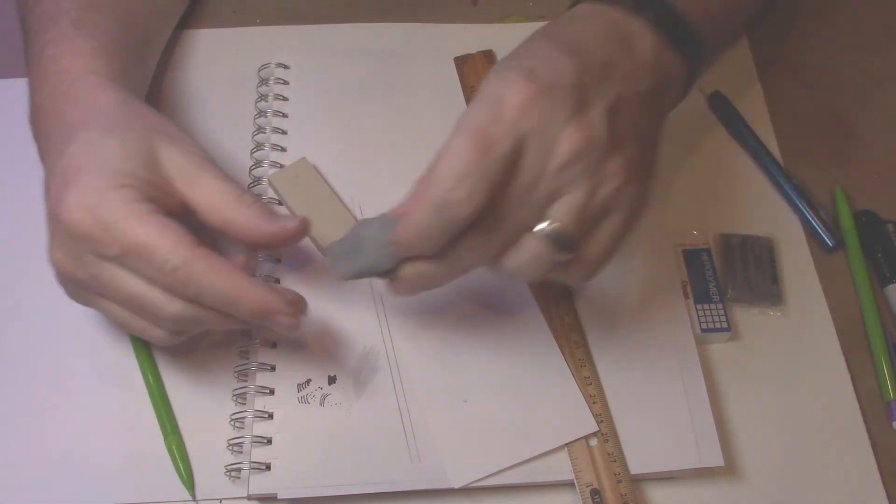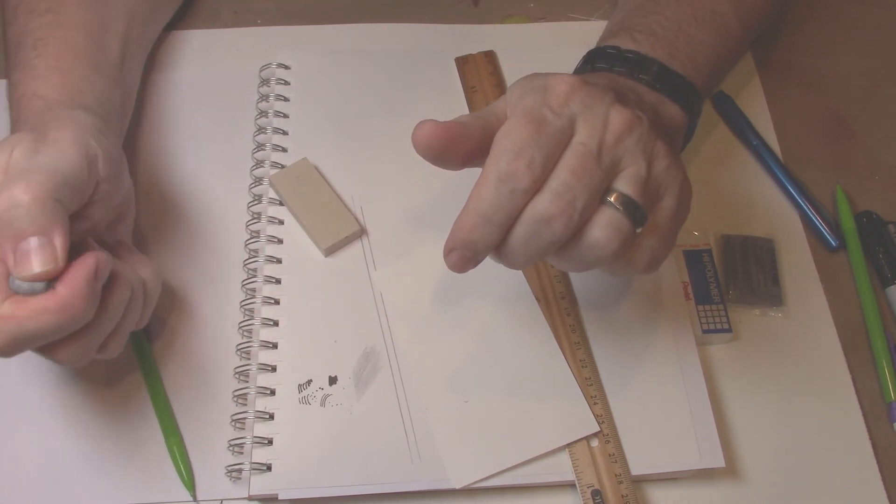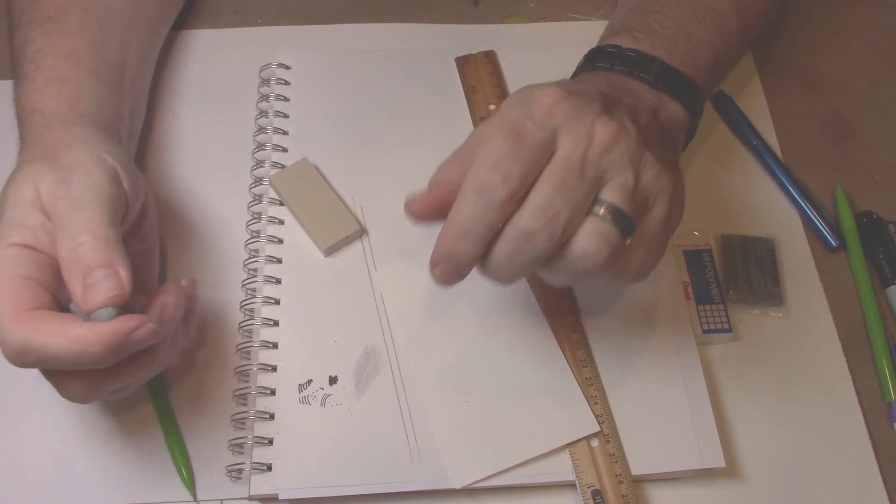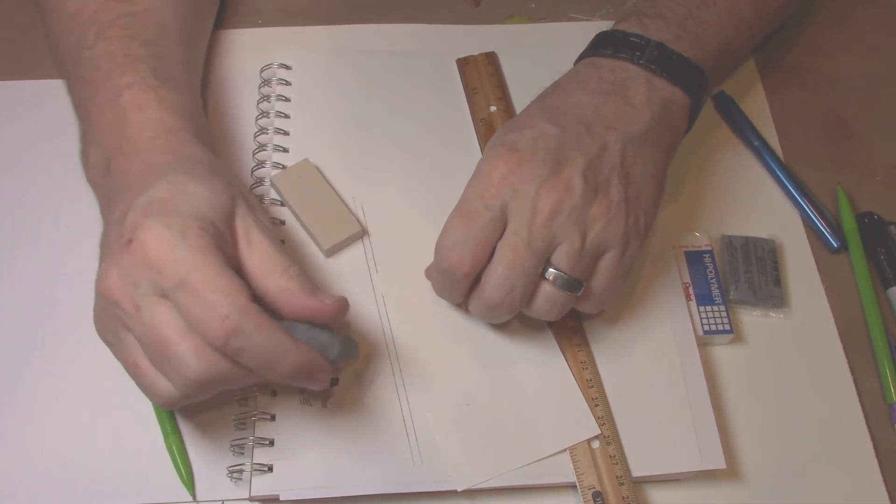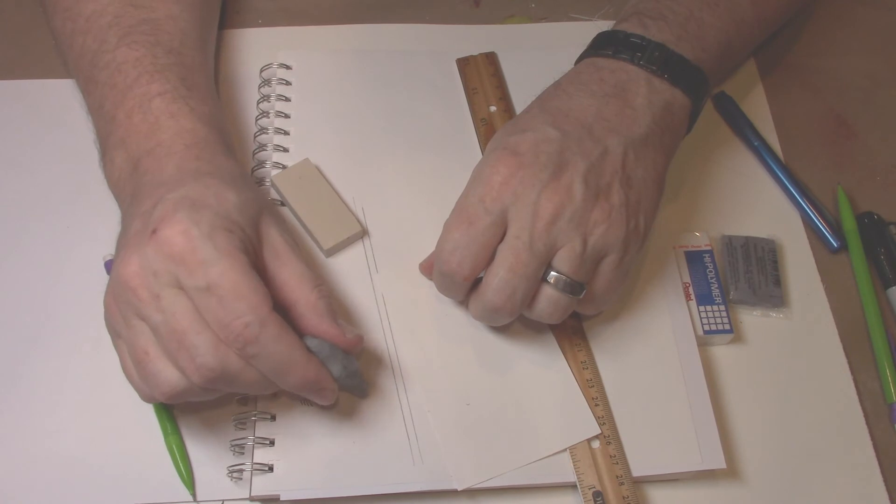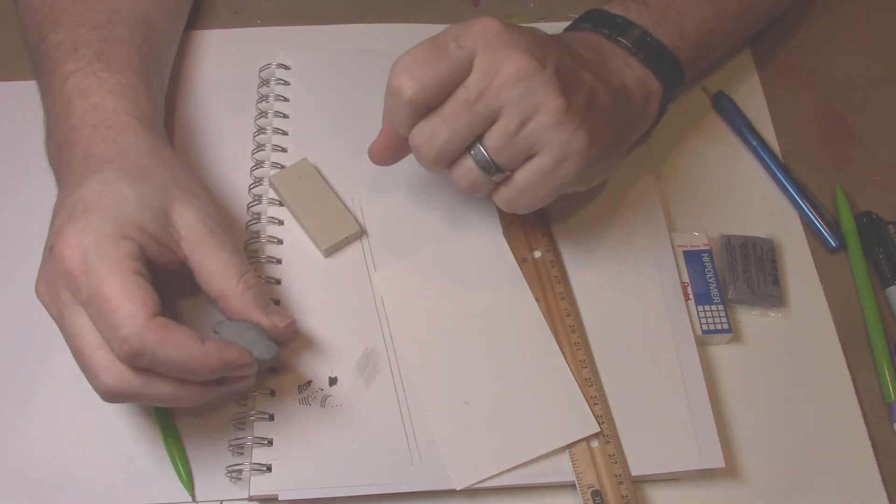Now I was talking about the kneaded eraser earlier and I'm going to go into much more detail with this. You can use this to make subtle adjustments to the graphite. So let's say I wanted to lighten it up a little bit. I'm just going to tap into it a little bit. And you can see there's still some of the graphite there, but most of the graphite is on the eraser.